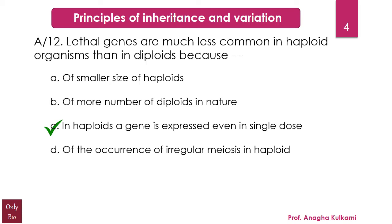Let us understand what exactly we mean by lethal genes. Lethal genes or lethal alleles are those which can cause the death of the organism that carries them — that means it is fatal. Lethal genes arise because of mutations in the genes that are essential for growth or development. These lethal genes can be dominant, recessive, or conditional depending on the genes involved.